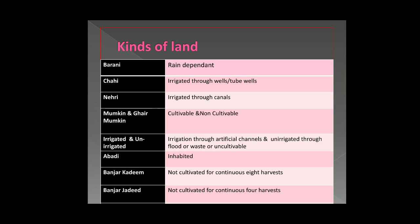There are several kinds of land you should know. Barani land is rain-dependent — there is no artificial channel for irrigation. Chaahi land is irrigated through wells or tube wells. Nehri land is irrigated through canals. Mumkin is cultivable land, and Ghayrmumkin is non-cultivable land — for example, where a house is constructed or the land has rocks and cannot be properly plowed.